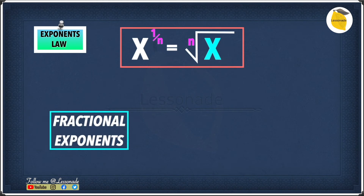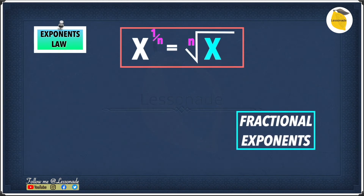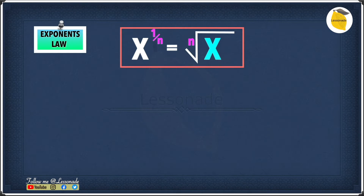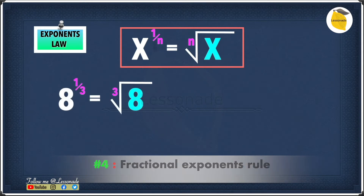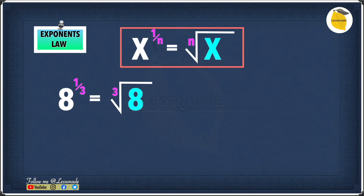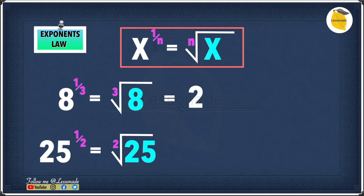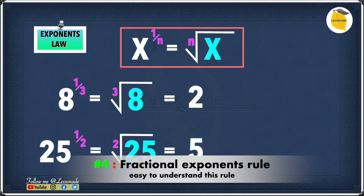Let's have a look at another rule called fractional exponents. We have x raised to the power of 1 over n equals the nth root of x. For example, 8 raised to the power of 1 over 3 is the cube root of 8, which equals 2. And 25 raised to the power of 1 over 2 is the square root of 25, which is 5. This rule is really simple.